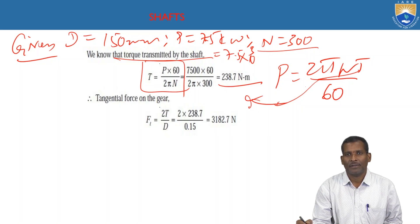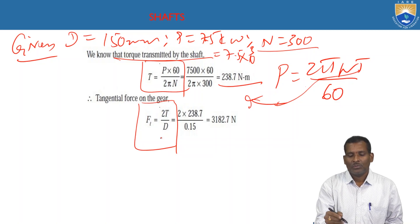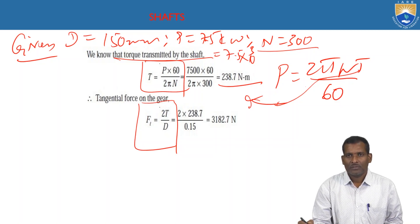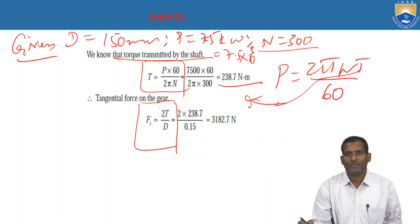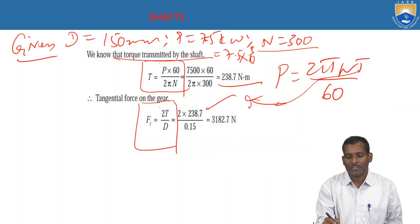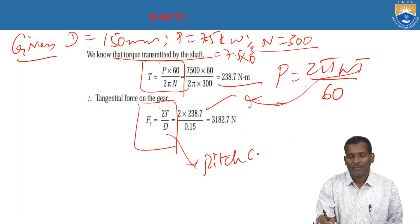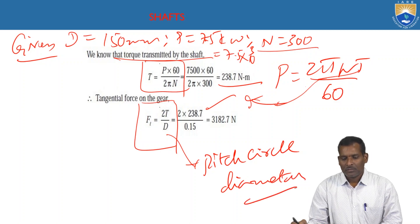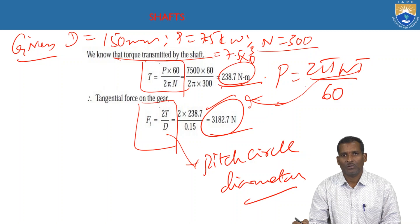Next, calculate the tangential force on the gear. The gear is mounted on the shaft, so the tangential force is Ft = 2T / D. Here T is the torque transmitted by the shaft. Substituting the calculated value with D = 150 mm pitch circle diameter, the obtained tangential force value is 3182.7 Newtons.